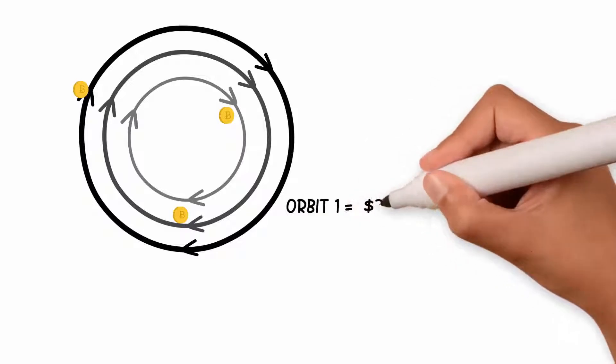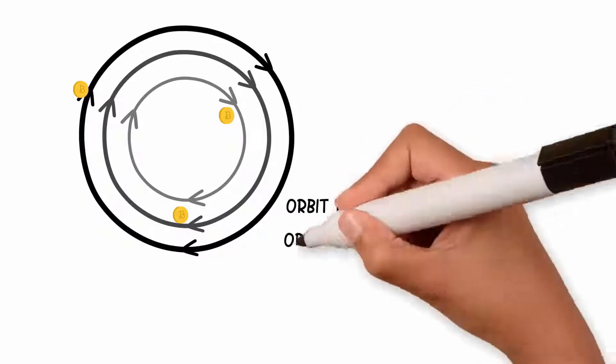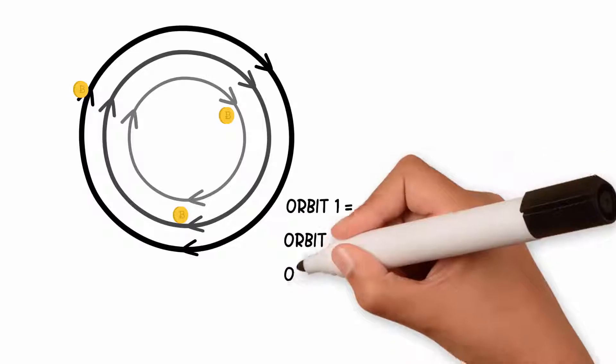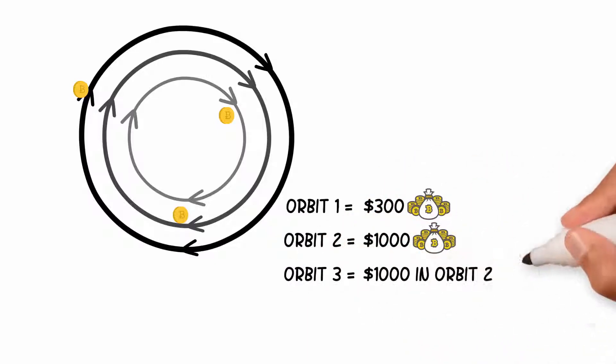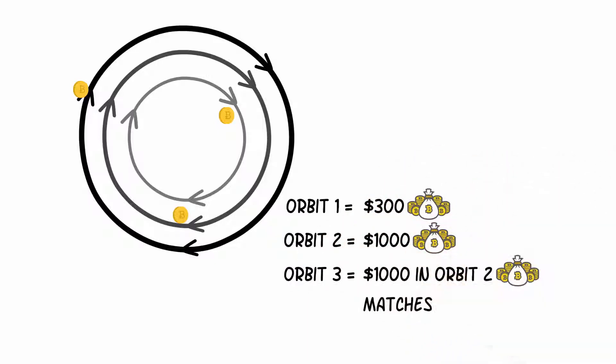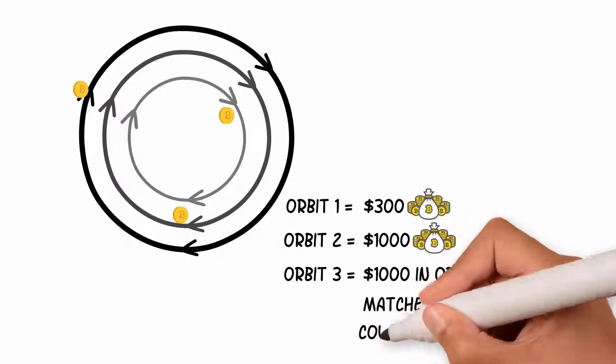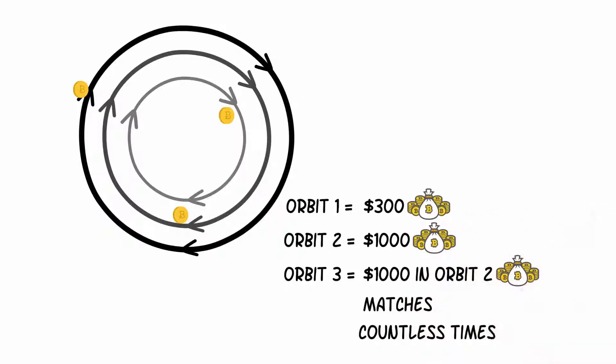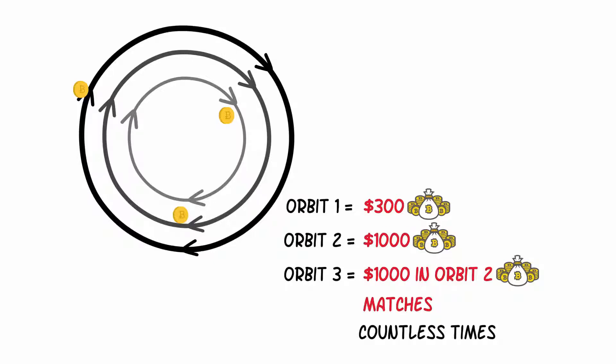Orbit one pays $300 in bitcoin. Orbit two pays $1,000 in bitcoin. Orbit three pays $1,000 in orbit two bitcoin matches, which is similar to a check match but in bitcoin. You can orbit countless times, even multiple times a day, because there's no limit placed on how much bitcoin can be sent to your crypto wallet.